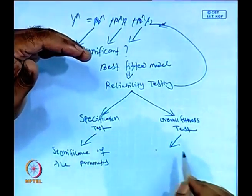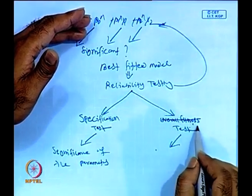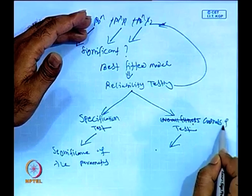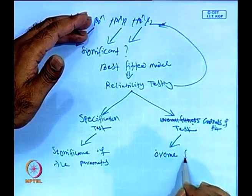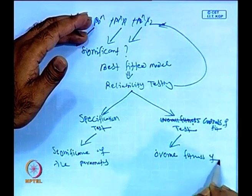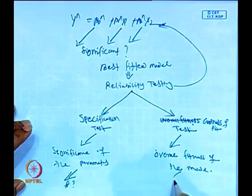For the specification test, we need t-statistics; for the goodness of fit test, we use F-statistics. For the best fitted model, all parameters should be statistically significant, and the overall fitness represented by R-squared and tested by F-statistic should also be significant — ideally at the 1% level.